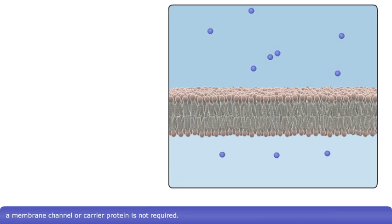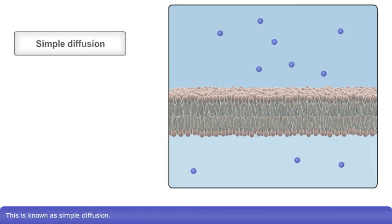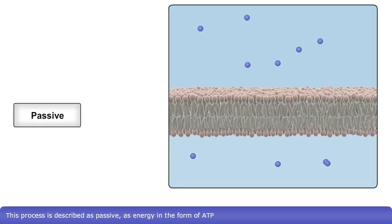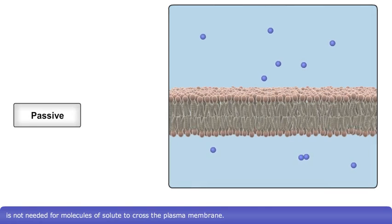A membrane channel or carrier protein is not required. This is known as simple diffusion. This process is described as passive, as energy in the form of ATP is not needed for molecules of solute to cross the plasma membrane.